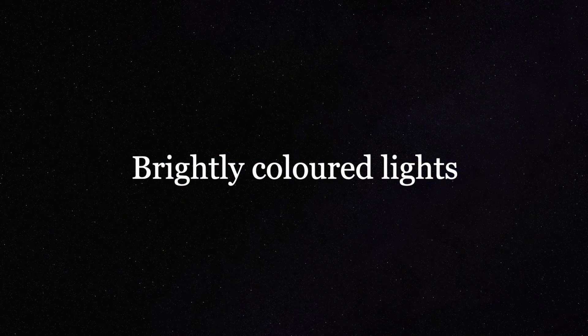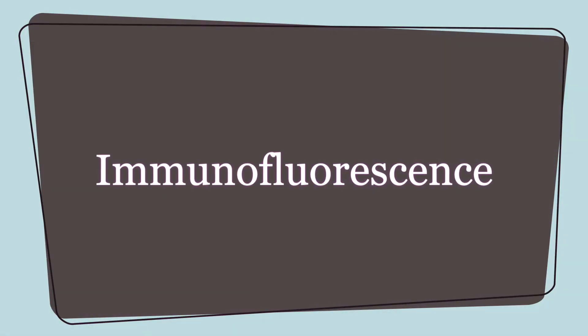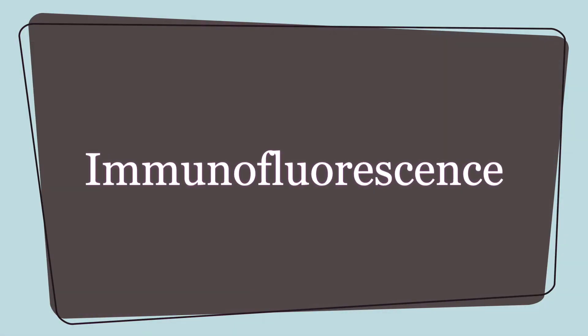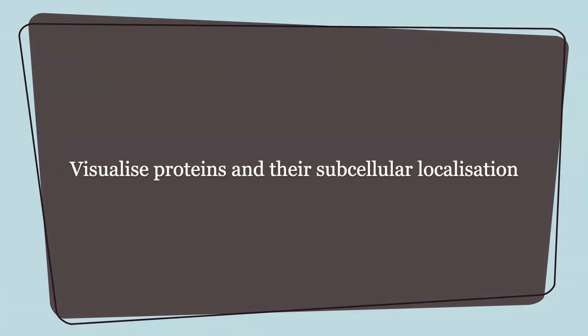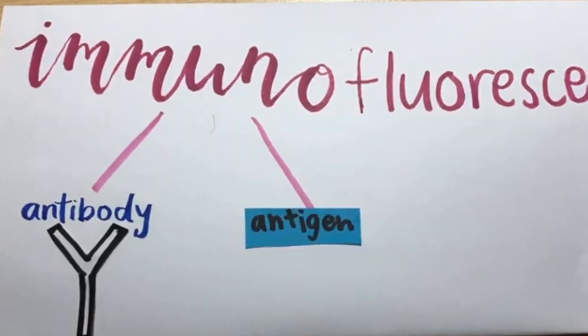Well, it turns out that the use of brightly colored lights works well not only for bikes, but also in the lab. Immunofluorescence is a technique commonly used by scientists to visualize proteins and their subcellular localization in the cell. Just like the immune system, the word immuno suggests the use of antibodies and antigen in this technique.